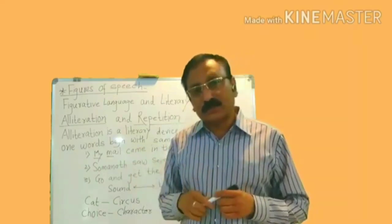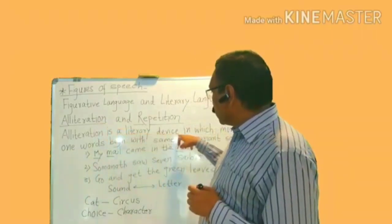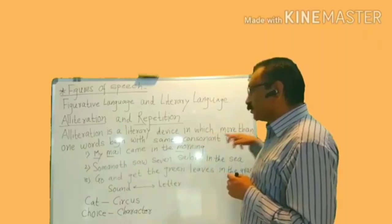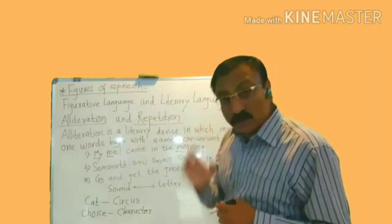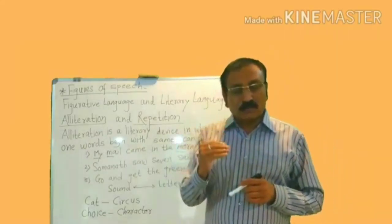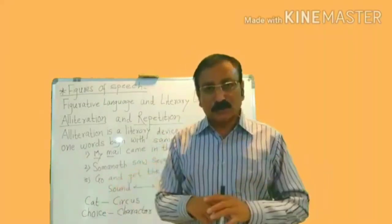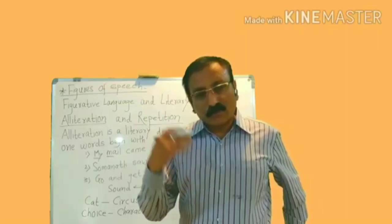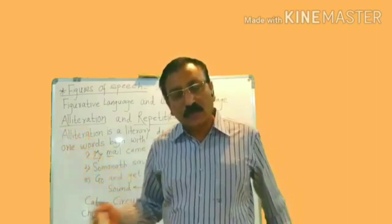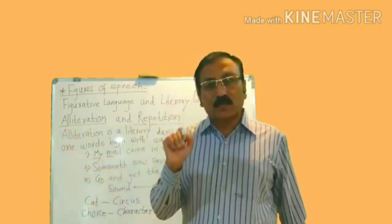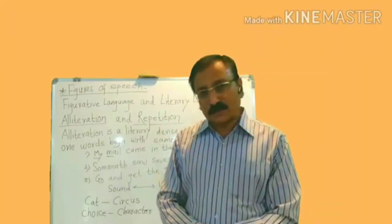So what is alliteration? Alliteration is a literary device in which more than one word begins with the same consonant sound. When we go through a poem and come across lines in which more than one word begins with the same consonant sound, that line is labelled as an example, an instance of alliteration.